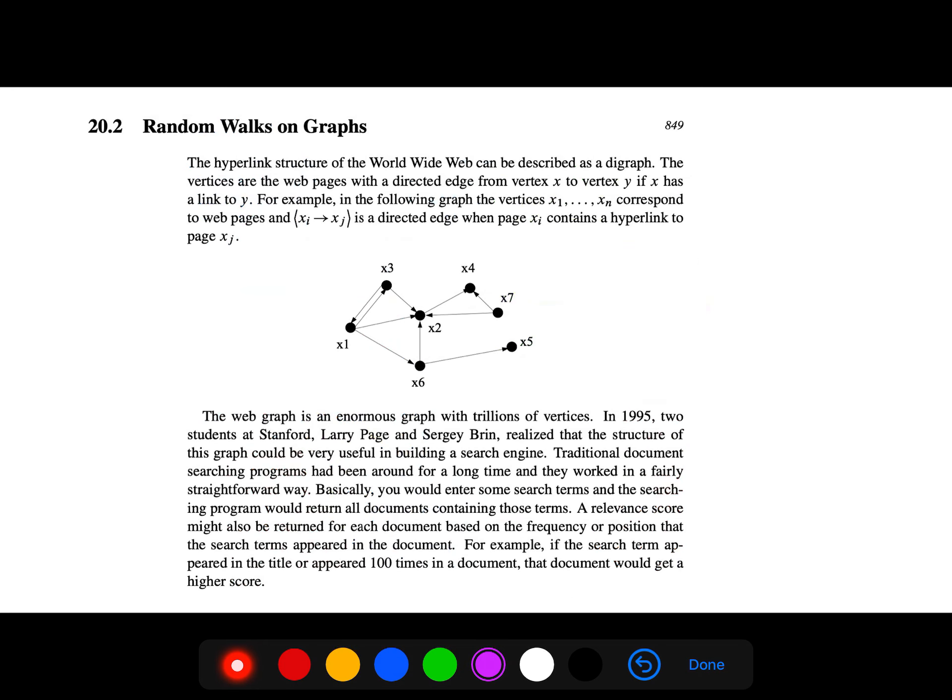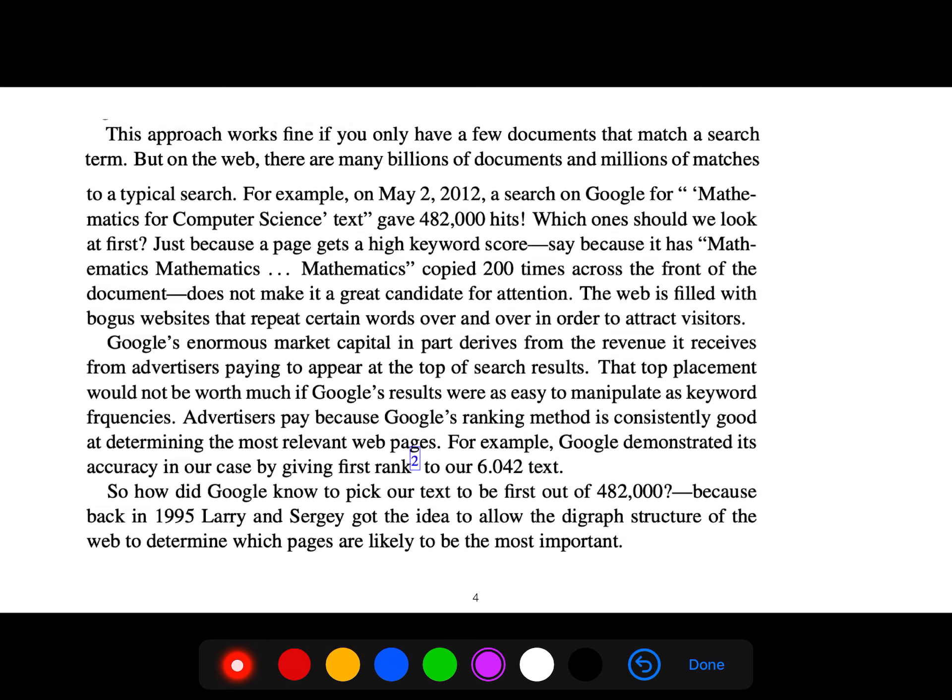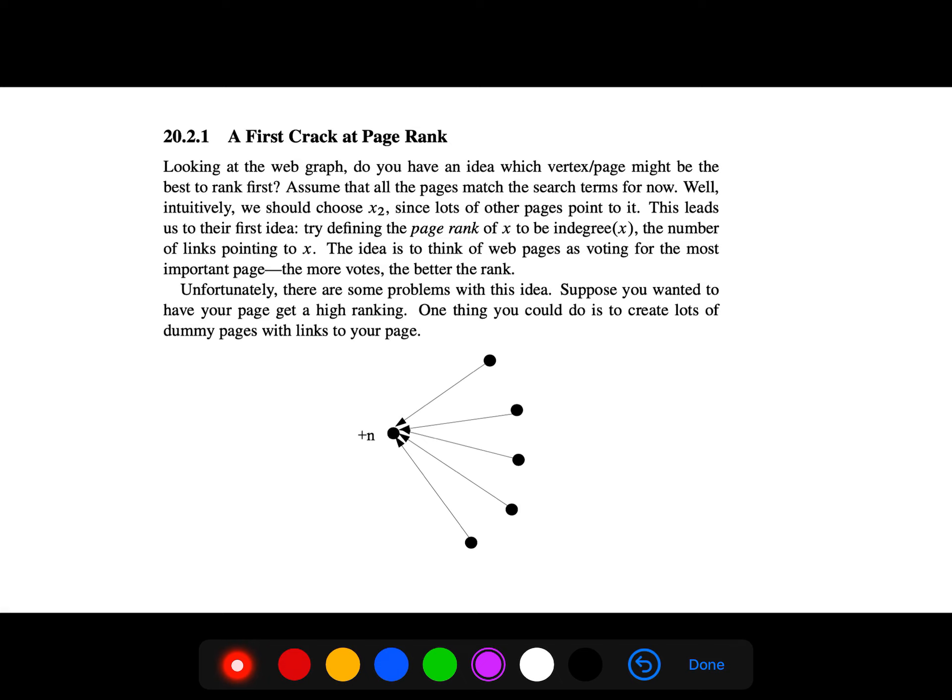You can think of the web as a hyperlink structure where the vertices are the web pages. So a first crack at PageRank: looking at the web graph, do you have any idea of which vertex might be best to rank first?